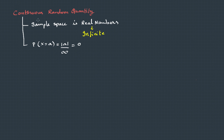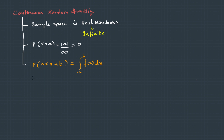So, from now, for continuous random variables, we will be writing probability as P(a ≤ x ≤ b). And the formula to calculate this is: integral of f(x) dx from a to b. And this probability is called the probability density function.